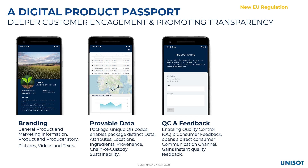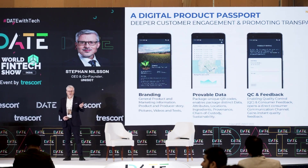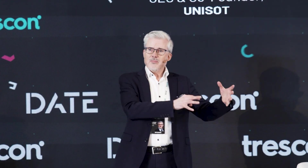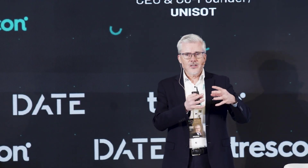We are adding functionality for quality feedback. Like when I arrived this morning with an Uber driver and I could rate the driver 1 to 5, we can do the same thing with products. When I have eaten some food or used a product, I can rate that product 1 to 5 and give that information directly back to the producers. By doing that, we create a communication channel between the producer and the consumer, where consumers can give direct feedback so producers can be more efficient and change their processes to fit customer needs.